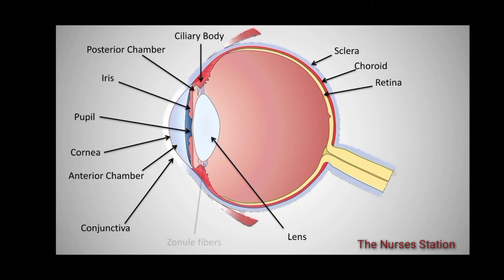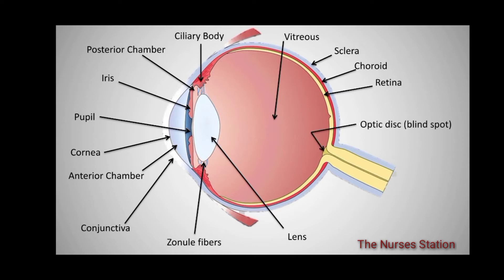The ciliary body and the zonule fibers together change the shape of the lens so that the light is focused on the retina. The vitreous is filled with the fluid called the vitreous humor. The optic disc is where the optic nerve leaves the eye; it is also called the blind spot because light falling on this point will not form any image. The optic nerve transmits signals from the eye to the brain.